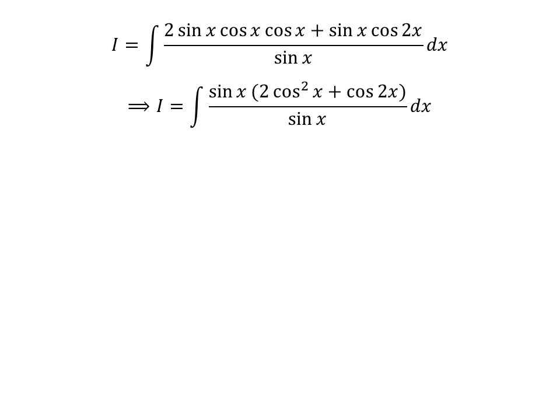Here, we take out the common factor sin(x) in the numerator. Cancelling the common factor sin(x) in the numerator and denominator gives us I equal to the integral of 2cos²(x) plus cos(2x).